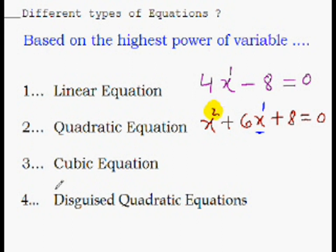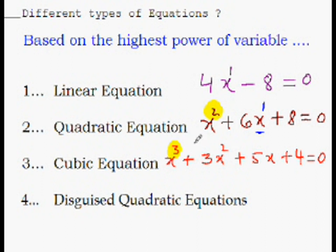The third type is a cubic equation — where the highest power is 3. You must have realized by now that everything in mathematics follows a smooth pattern, and once we recognize that pattern everything else falls into place. That is the beauty of mathematics — one, two, three — can you spot the pattern?